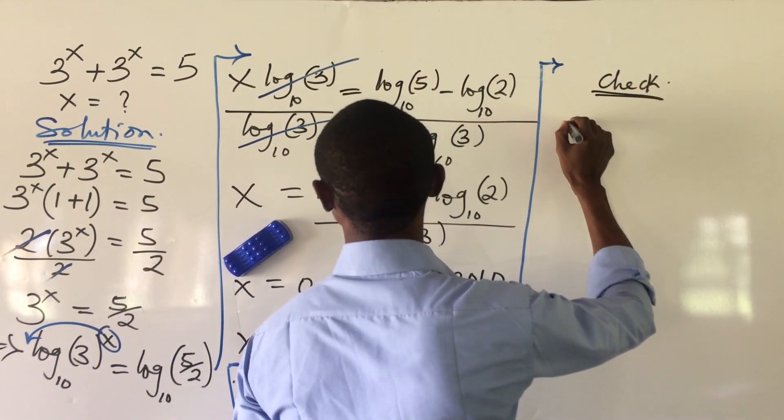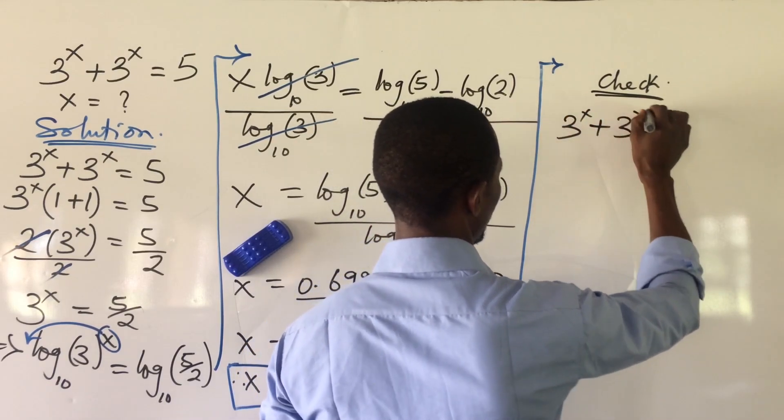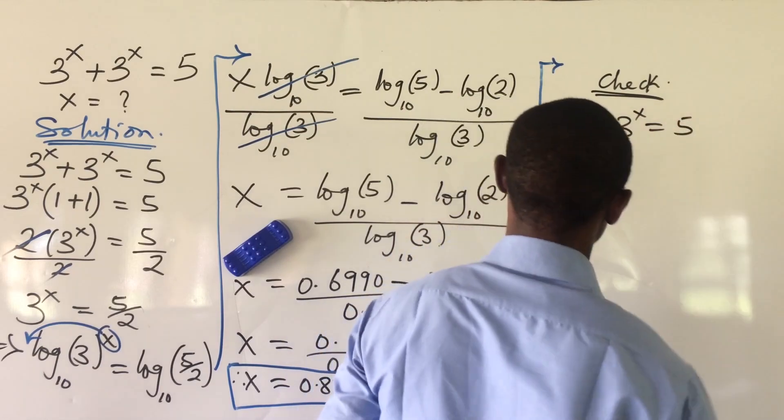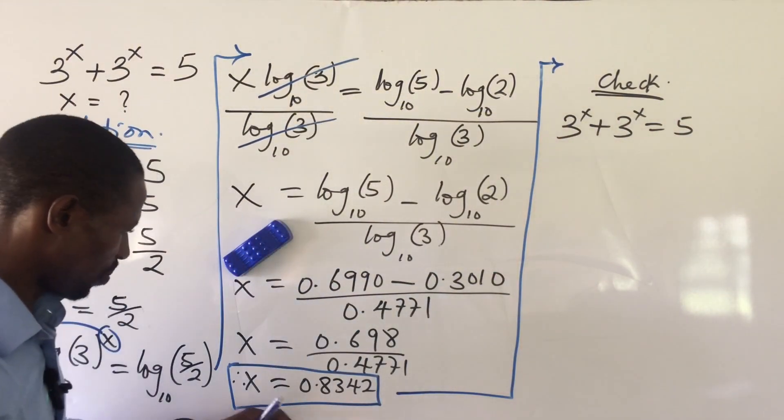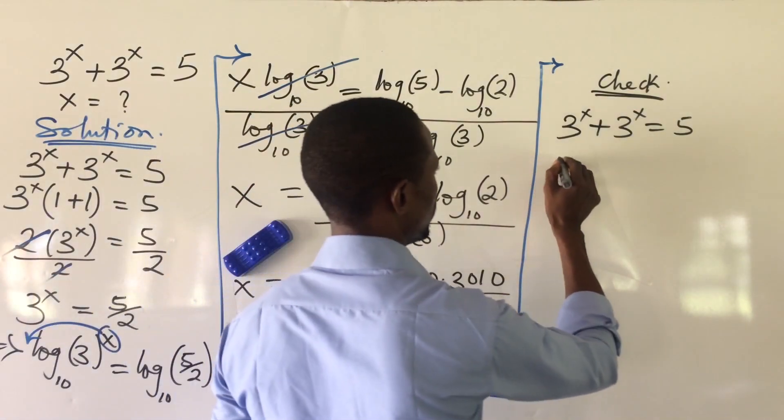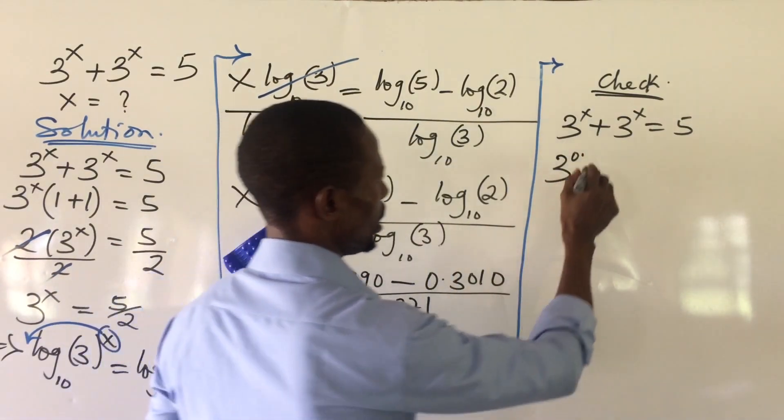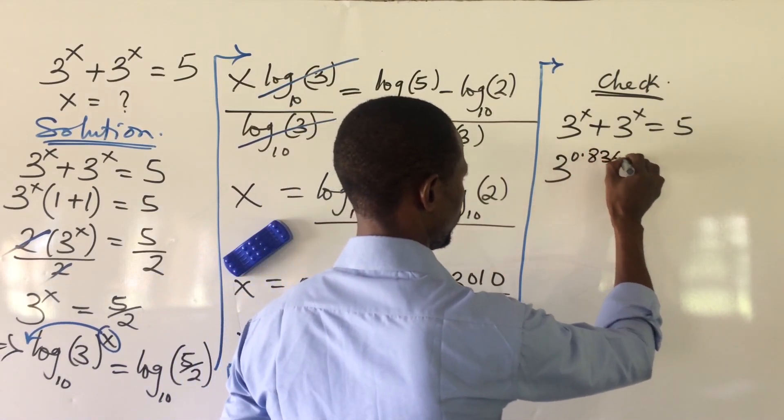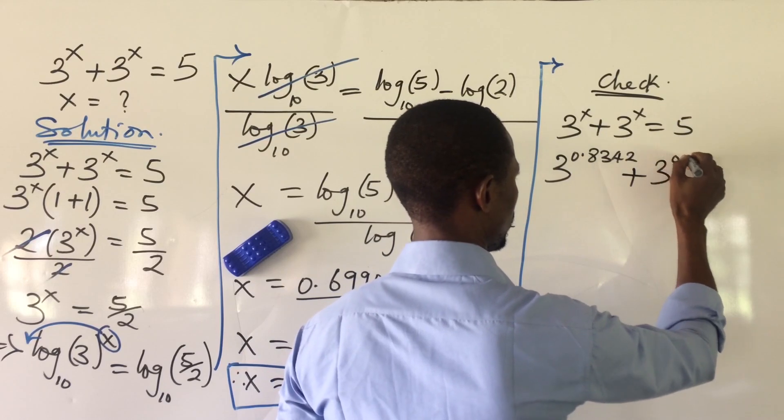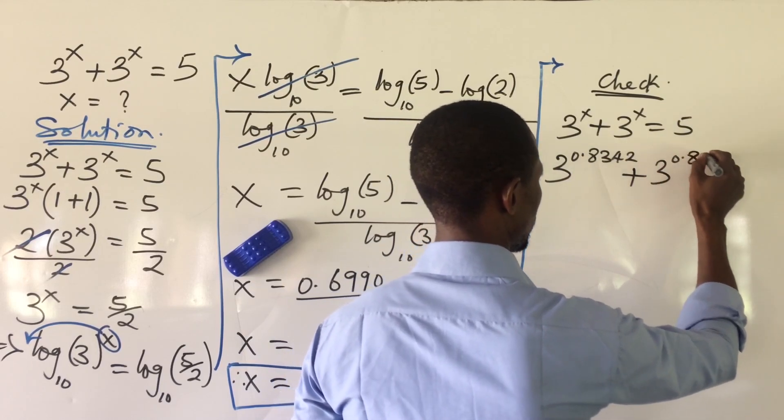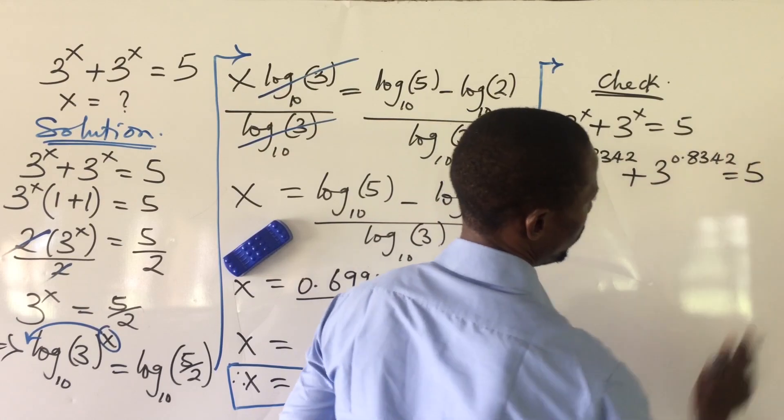We put down our equation, which is 3 to the power of x plus 3 to the power of x equal to 5. So wherever we see x, we put in this value. So this will now give us 3 to the power of 0.8342 plus 3 to the power of 0.8342 equal to 5.